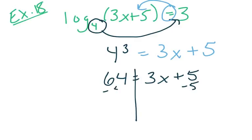I'll subtract 5 from both sides, so I get 59 equals 3x. And then divide both sides by 3. So I get 59 over 3, I don't think that reduces, is equal to x.